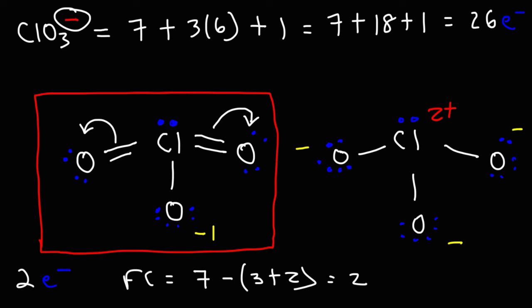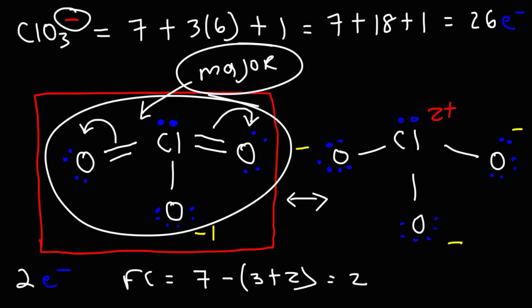So this is still an acceptable Lewis structure. However, it's not the most stable Lewis structure due to the separation of charge. This Lewis structure, the charges have been minimized. Here, there's so many charges in this Lewis structure that it's not very stable. So whenever you have charge separation, you have a resonance structure that is less stable. So both of these structures are resonance structures, but this is the most stable resonance structure. So this is going to be the major resonance contributor. In short, this is the best Lewis structure for the chlorate ion.